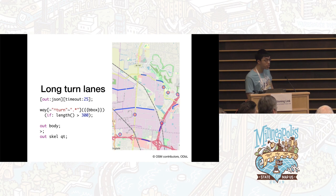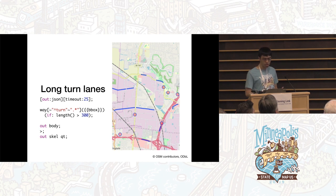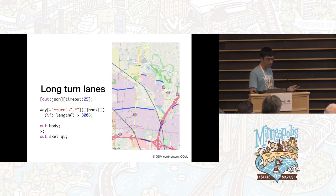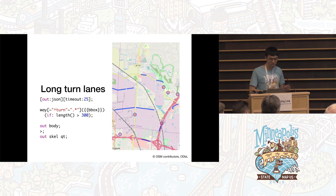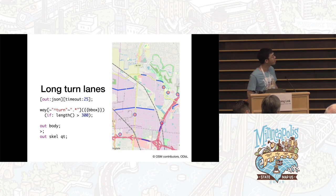There's an 'if' evaluator syntax that lets you decide whether a feature should be returned on an individual basis. This query finds turn lane ways, but only returns one that is over 300 meters long. It turns out most of these long ones are center turn lanes, so they're not quite the same as a normal turn lane — that's why they're so long.